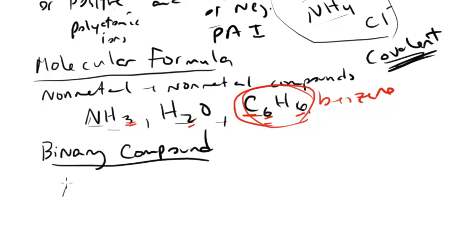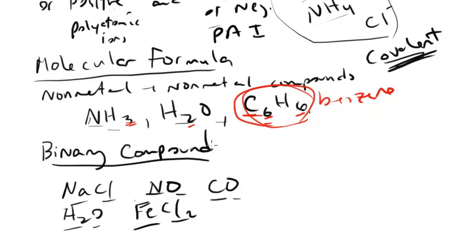So an example would be NaCl. That is a binary compound. Let me think of some others. NO would be a binary compound. CO. Also H2O, FeCl2. They can have more than one atom, but they've got only two elements total. So a binary compound is made of two only elements.